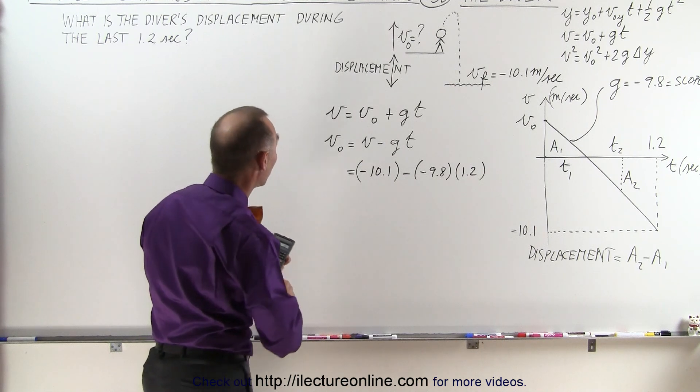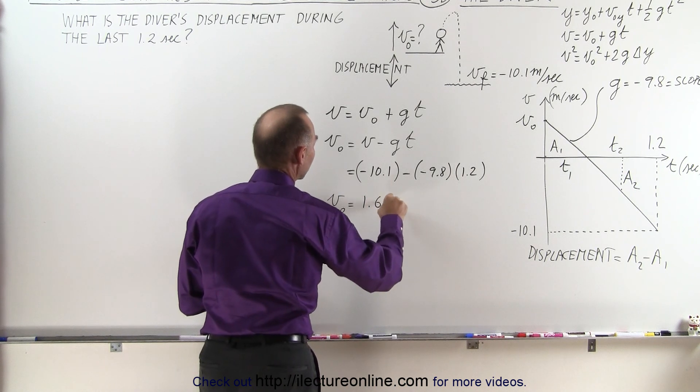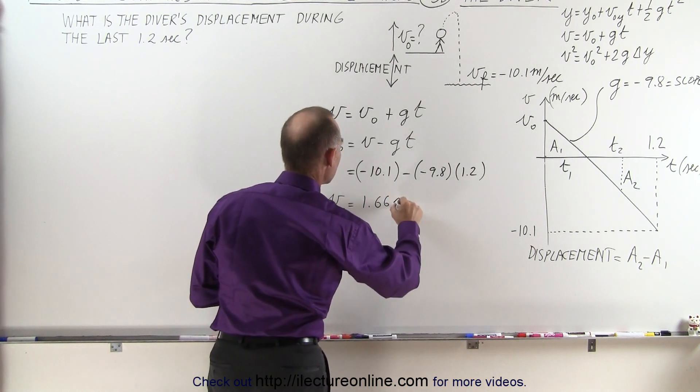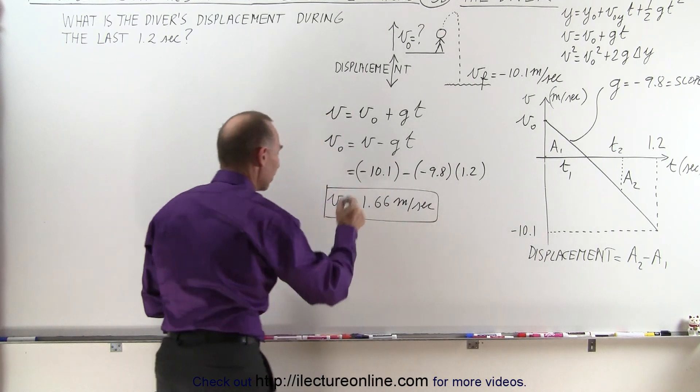And we get 1.66. So note that our initial velocity is equal to 1.66, and that would be meters per second, positive, because the diver starts in an upward direction.